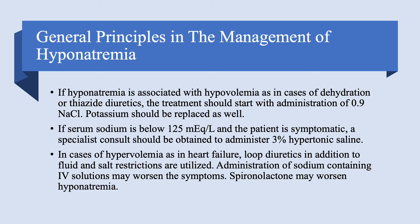Continuing with general principles: if hyponatremia is associated with hypovolemia — dehydration from vomiting, diarrhea, or thiazide-type diuretics — we should start with 0.9% normal saline. We replace sodium with saline and replace potassium, and usually that's enough. When serum sodium is below 125 and the patient is symptomatic, we need to consult a nephrologist or endocrinologist.